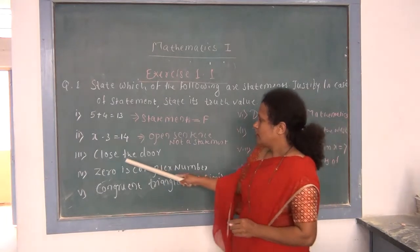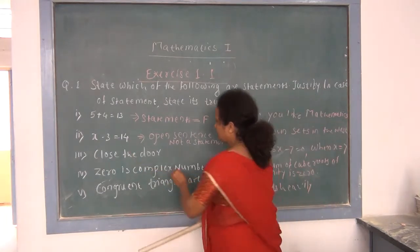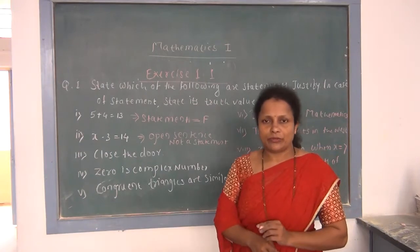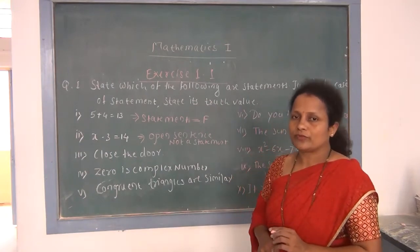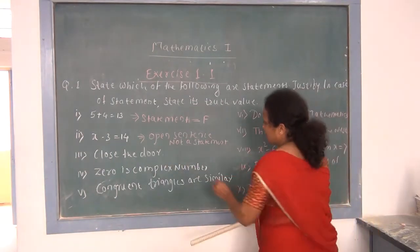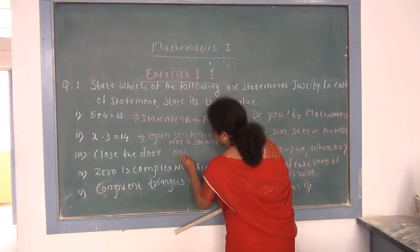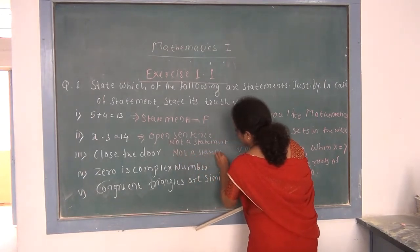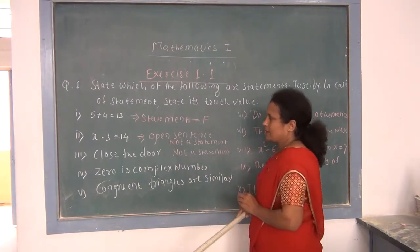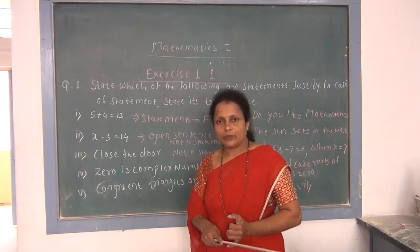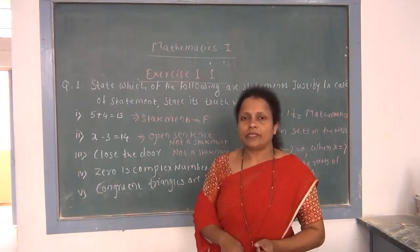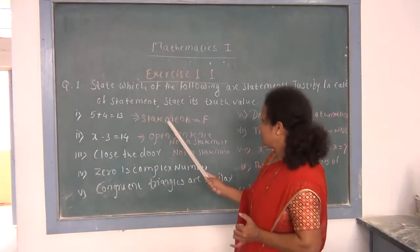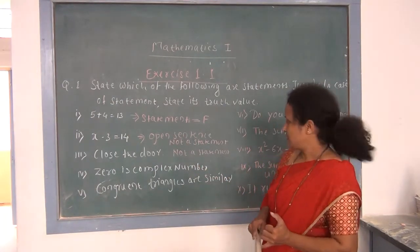Third: 'Close the door.' This is an imperative sentence which doesn't have a truth value — true or false — so it is not a statement. Remember: interrogative, exclamatory, and imperative sentences are not statements. Open sentences are also not statements.